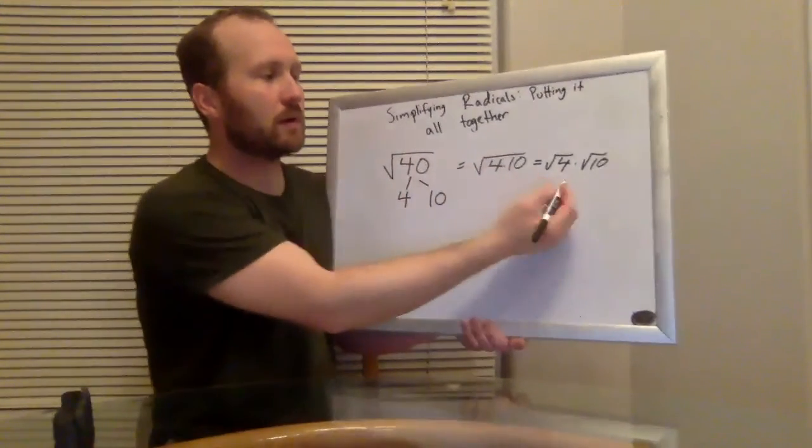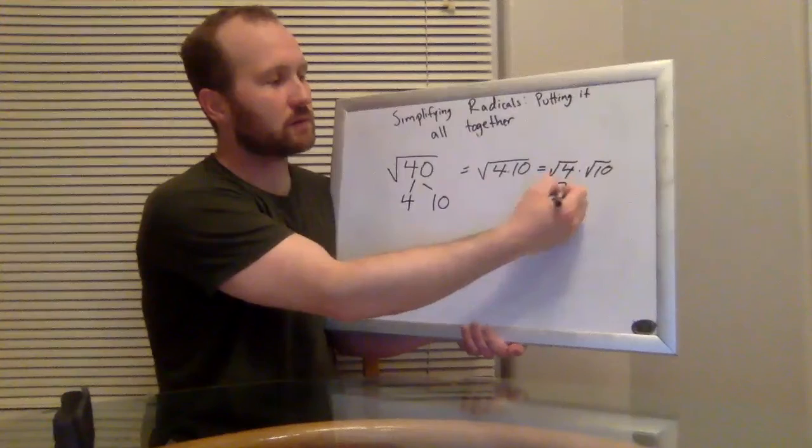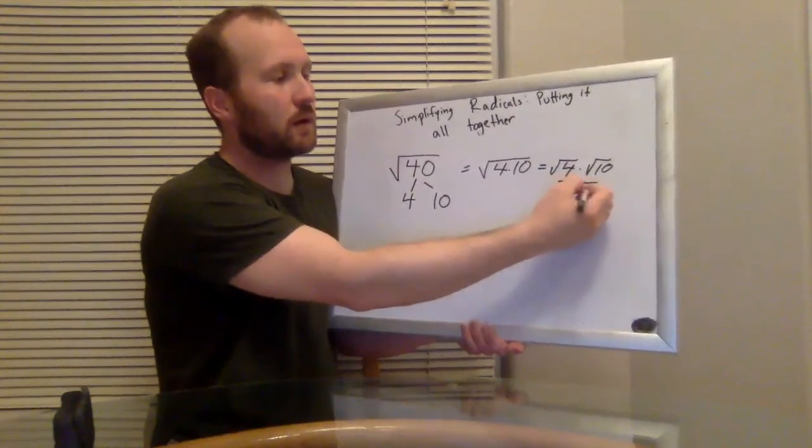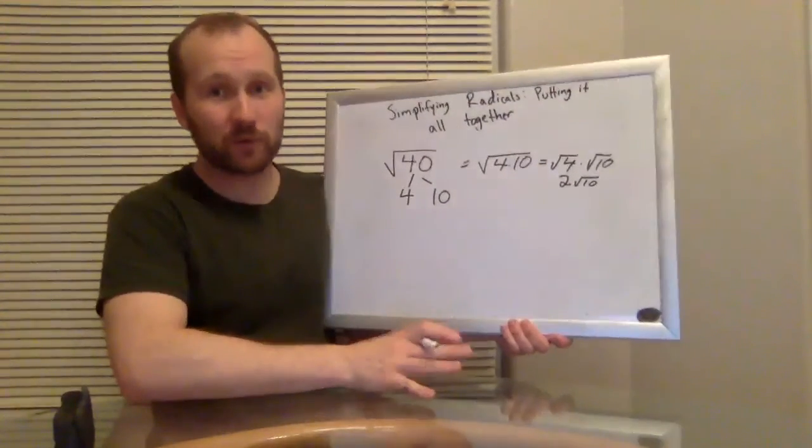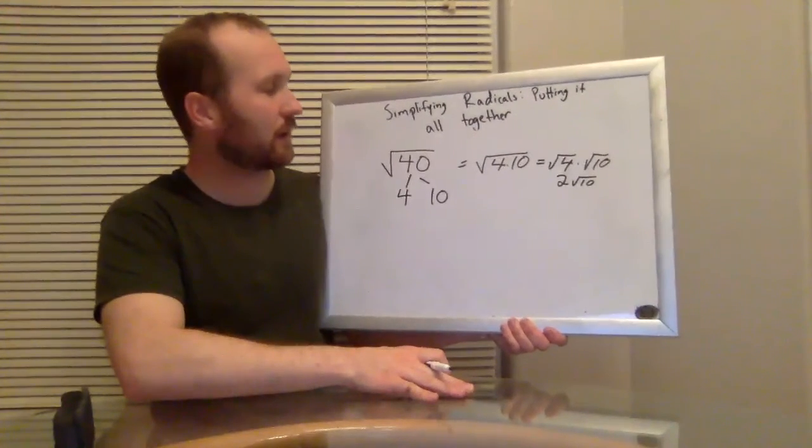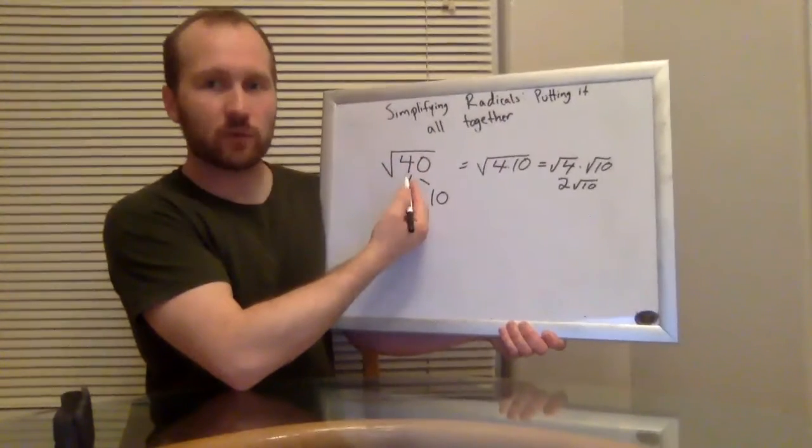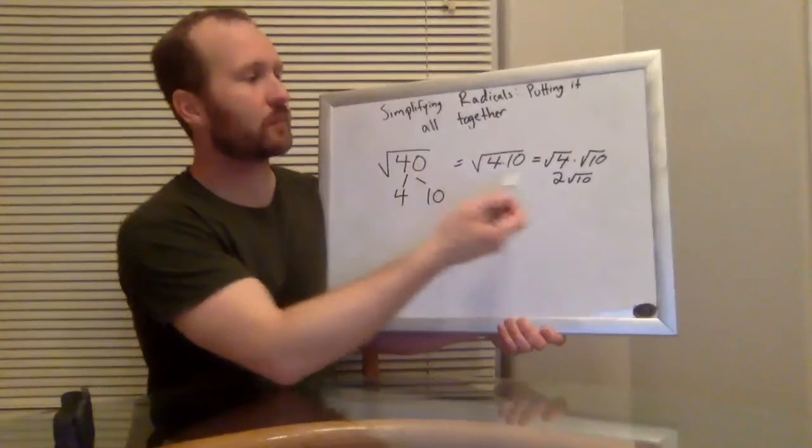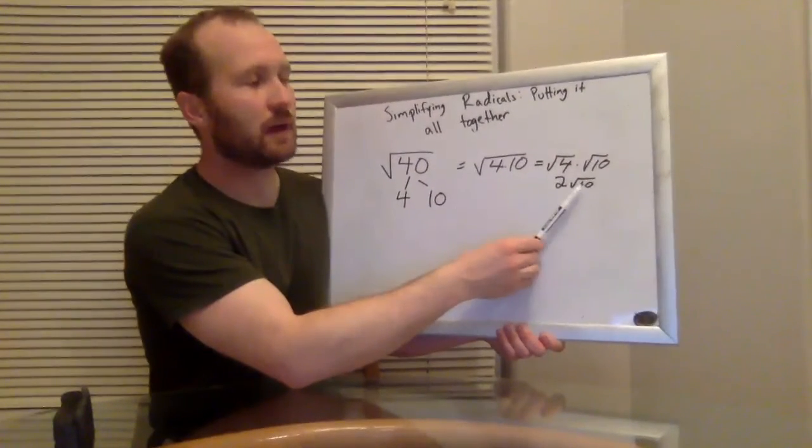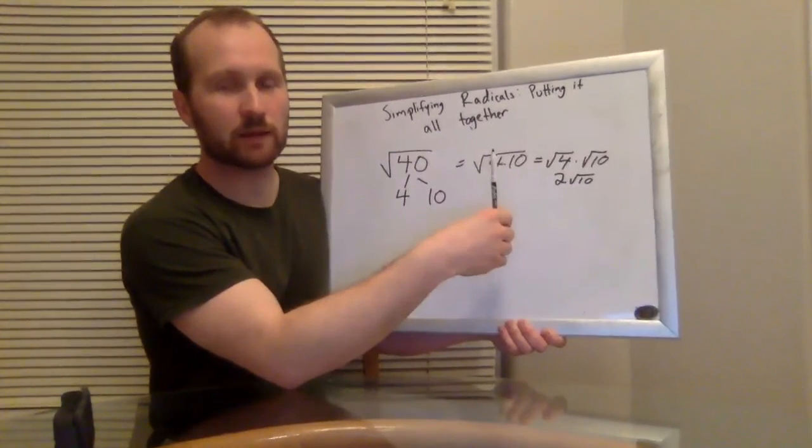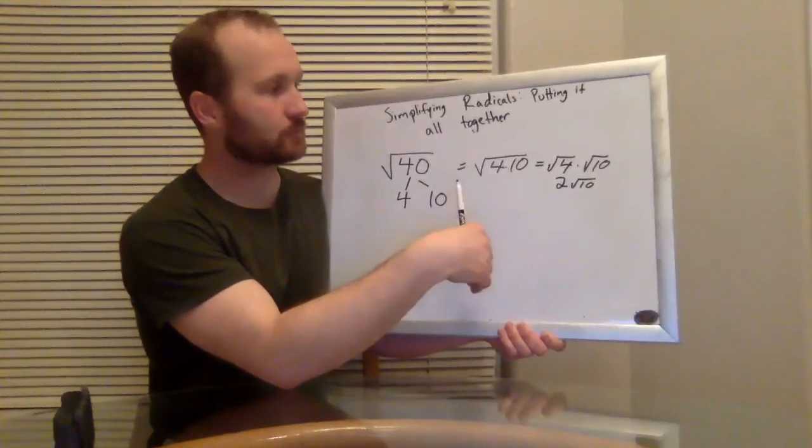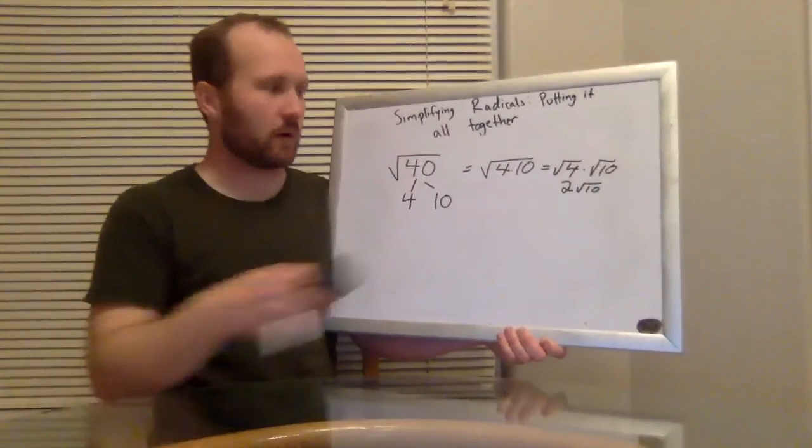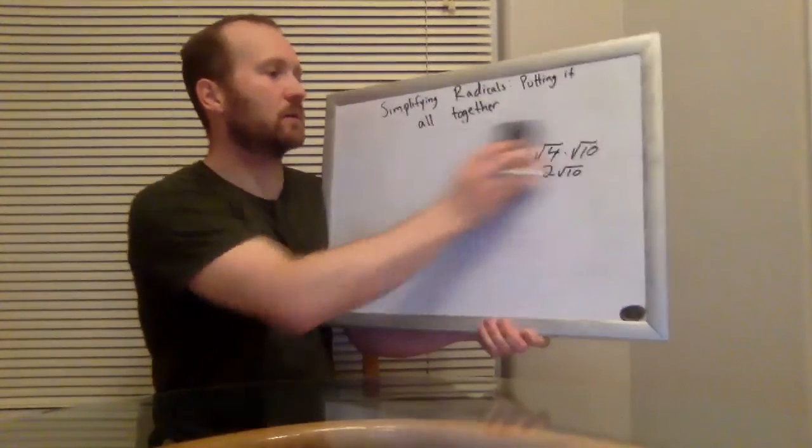Going back to the problem up here now, we can simplify that because the square root of four is two. And so I could rewrite this as two square roots of 10. One more way to prove this to yourself, grab a calculator, type in square root of 40. Notice what you got now, type in the square root of 10, and multiply that times two. You should get exactly the same thing.